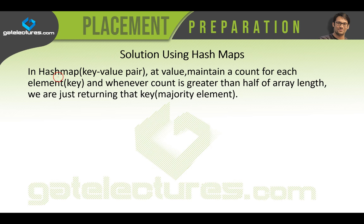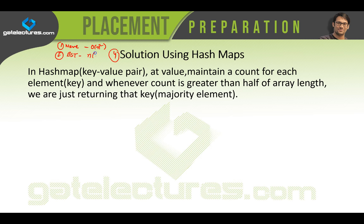We were discussing the majority element, and this is the fourth solution in the same series. The first solution is the naive algorithm with O(n²) time complexity. The second solution uses a binary search tree with O(n log n) time complexity. The third solution used Moore's voting algorithm with O(n) time complexity.